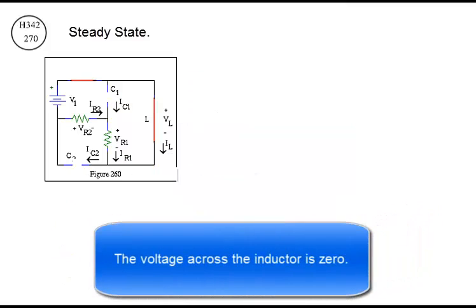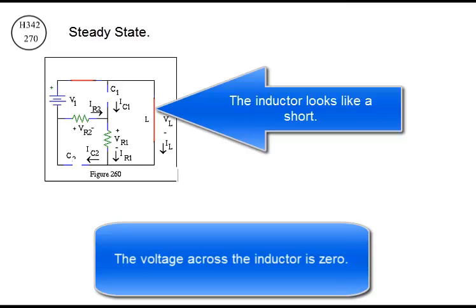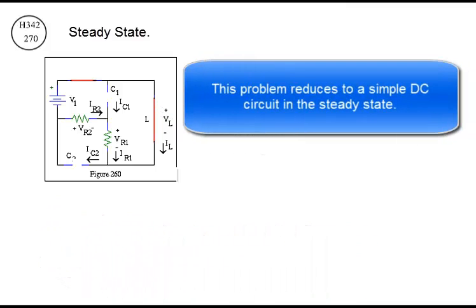The voltage across the inductor is zero. The inductor looks like a short. This problem reduces to a simple DC circuit in the steady state.